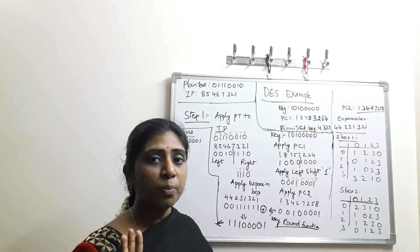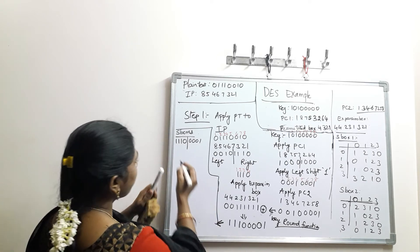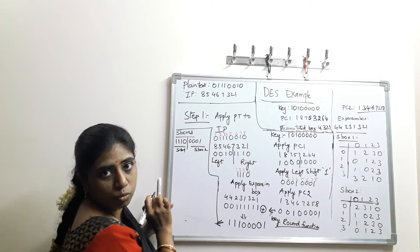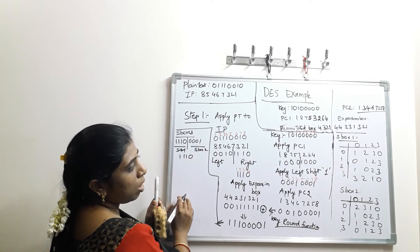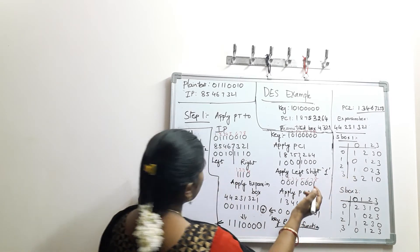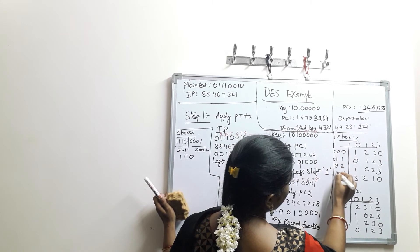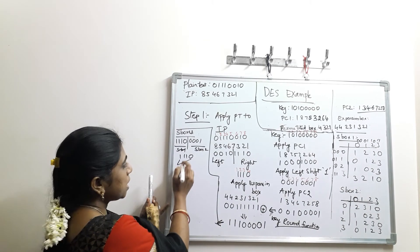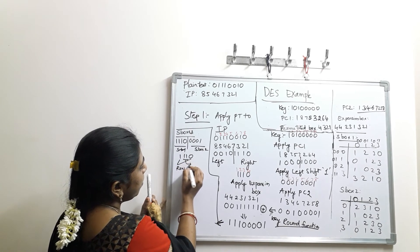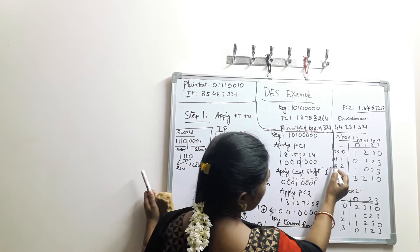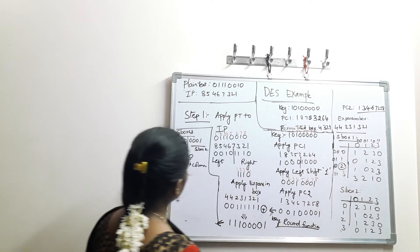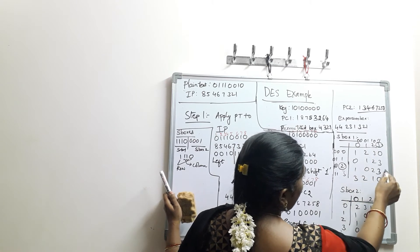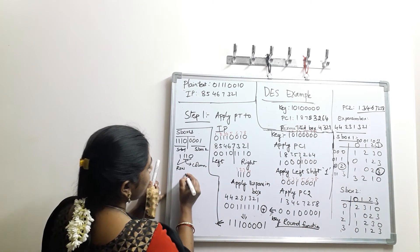For S-box 1, apply the 4 bits: 1, 1, 1, 0. The corner bits represent the row and the middle bits represent the column. The row bits give 1, 0 which is row 2, and the column bits 1, 1 represent column 3. Looking up S-box 1 at row 2, column 3, the output value is 3, giving output bits 1, 1.